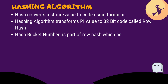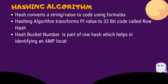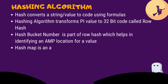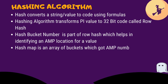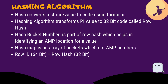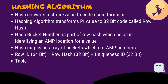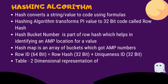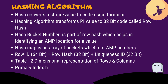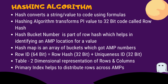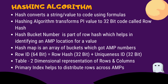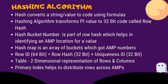The hashing algorithm generates a 32-bit number called the Row Hash. The higher-order bits of the row hash — the first 16 bits — are used to identify the Hash Map entry. A Hash Bucket Number is the part of the row hash that helps identify an AMP location for a value. The Hash Map is an array of buckets containing specific AMP numbers — it is the mechanism to determine which AMP a row is stored on. The AMP then uses the 32-bit row hash to allocate rows within its disk, and adds a 32-bit Uniqueness ID if any records share the same row hash.